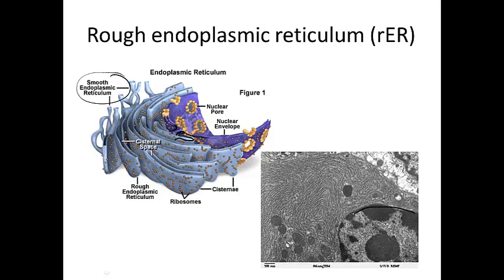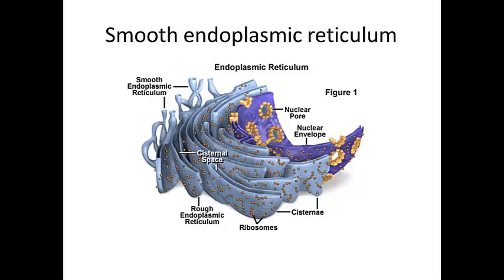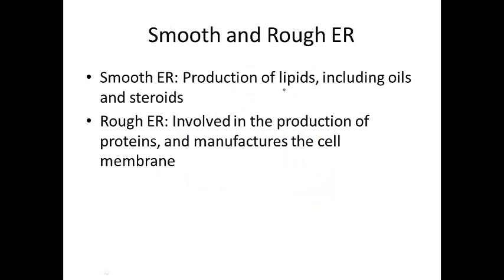Here's a micrograph showing the nucleus and all of this rough ER throughout. The smooth ER produces lipids, which includes oils and steroids. Steroids are hormones like testosterone. Rough ER is involved in the production of proteins and is also a factory for the cell membrane. You might think about where these two types of ER would be distributed in the body — for example, where lots of steroid hormone is made you'd expect more smooth ER, and where lots of protein is made you'd expect more rough ER.